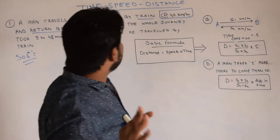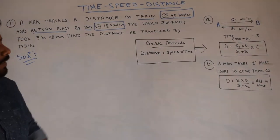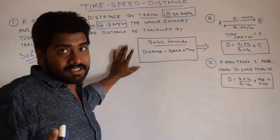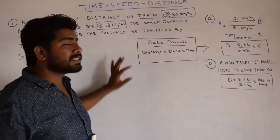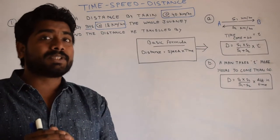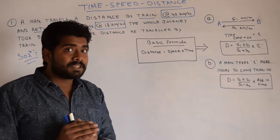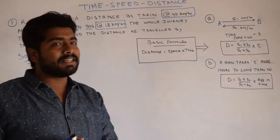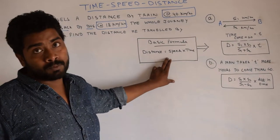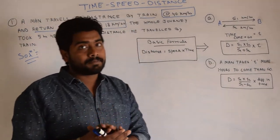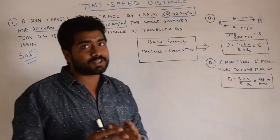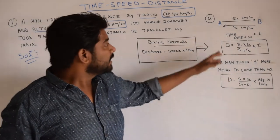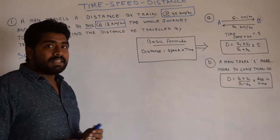In this video we will be discussing the Time, Speed and Distance topic. There is one basic formula that can solve all Time-Speed-Distance questions. But in computer examinations there is a time constraint, so in order to solve problems very efficiently and in less time, we have several variations of this basic formula. We will be discussing two such variations and solving questions based on them.